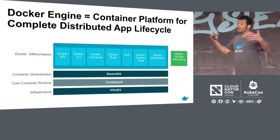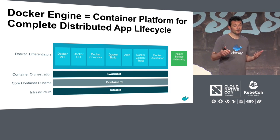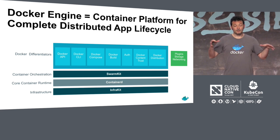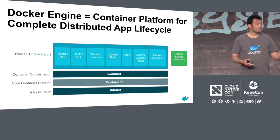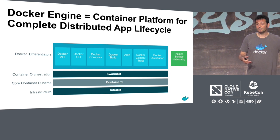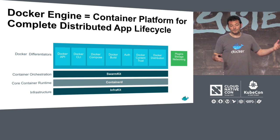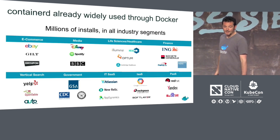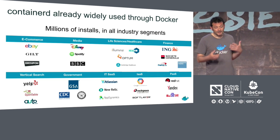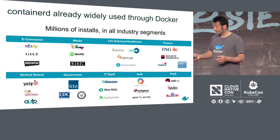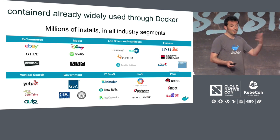Docker Engine itself is much wider than Containerd — that's why I was talking about the core. Docker is a complete container platform for the complete distributed application lifecycle. Containerd is the core container runtime, with SwarmKit for orchestration and a bunch of other Docker services. Containerd is widely used through Docker, with millions of installations across all industry segments. There's a good chance you're already using it — it's a stable, battle-tested code base.